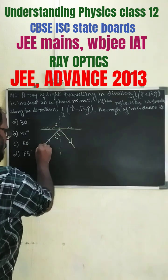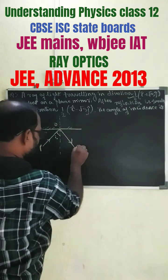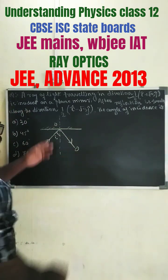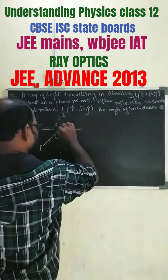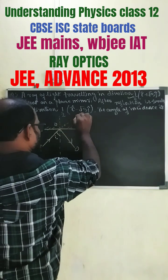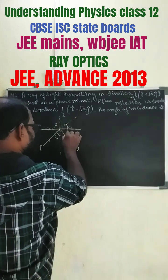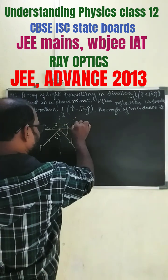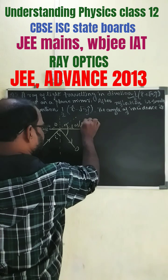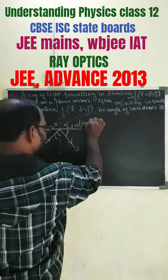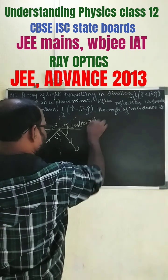Let this be OPQ. Now if we extend this, this angle becomes cos(180 minus 2i).